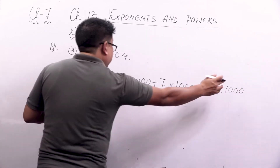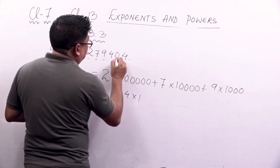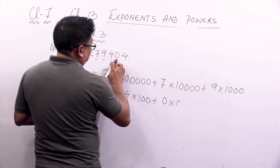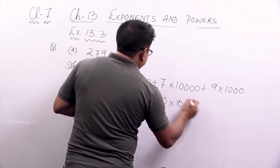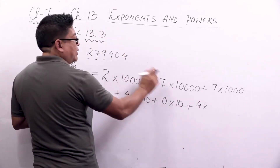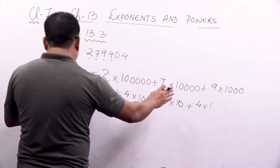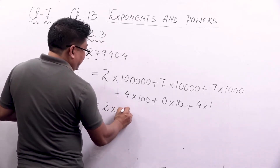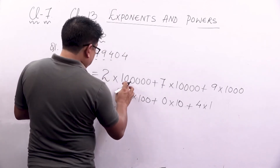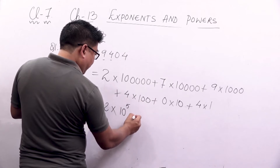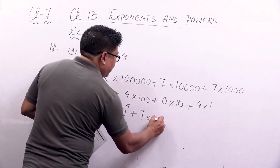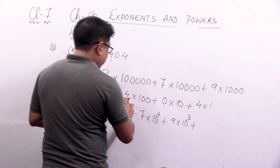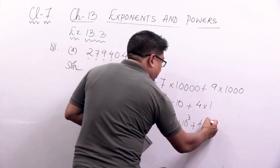So this is your expanded form. We can also write it using powers of 10: 2 into 10 to the power 5, plus 7 into 10 to the power 4, plus 9 into 10 to the power 3, plus 4 into 10 to the power 2, plus 0 into 10 to the power 1, plus 4 into 10 to the power 0. We do not need to write the zero term, but just for understanding I include it. 10 to the power 0 equals 1.